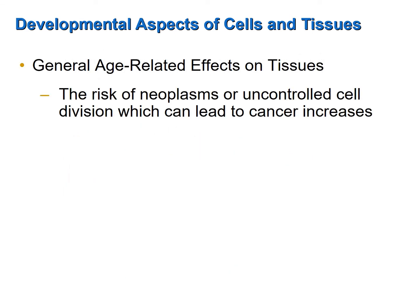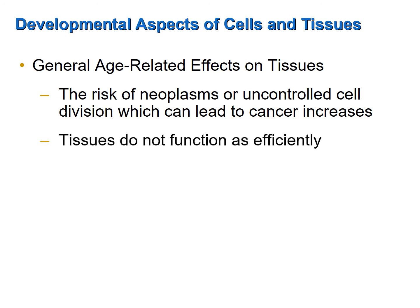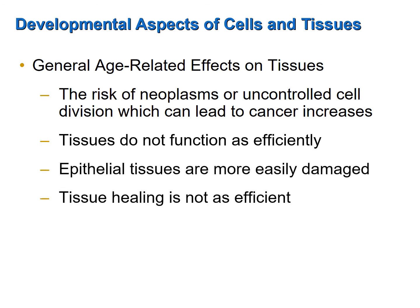Finally, I would like to mention a few general age-related effects on tissues. As one ages, there is an increased risk of neoplasms. Neoplasms are uncontrolled cell division, and in some cases these can lead to cancer. Tissues also do not function as efficiently as one ages. Epithelial tissues specifically are more easily damaged, and in general, tissue healing is not as efficient.